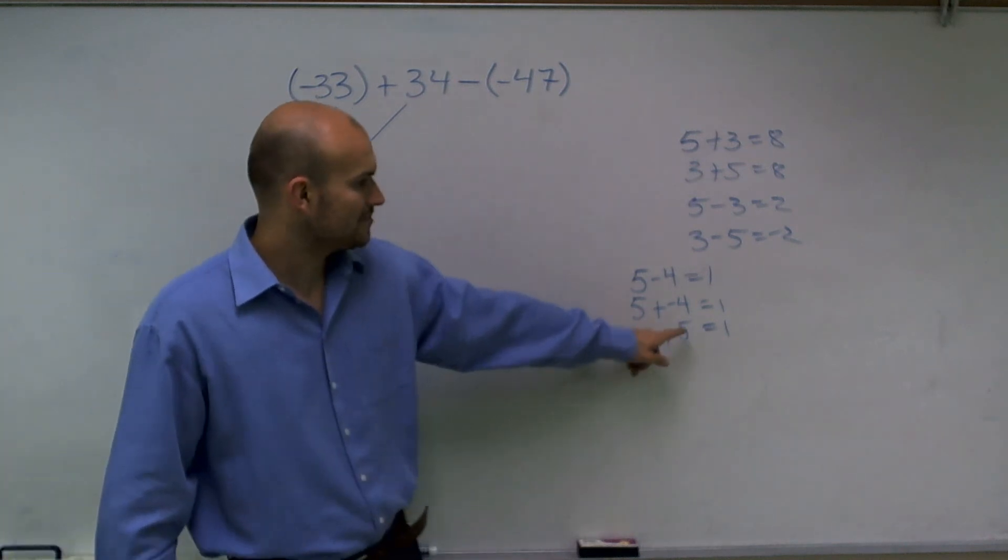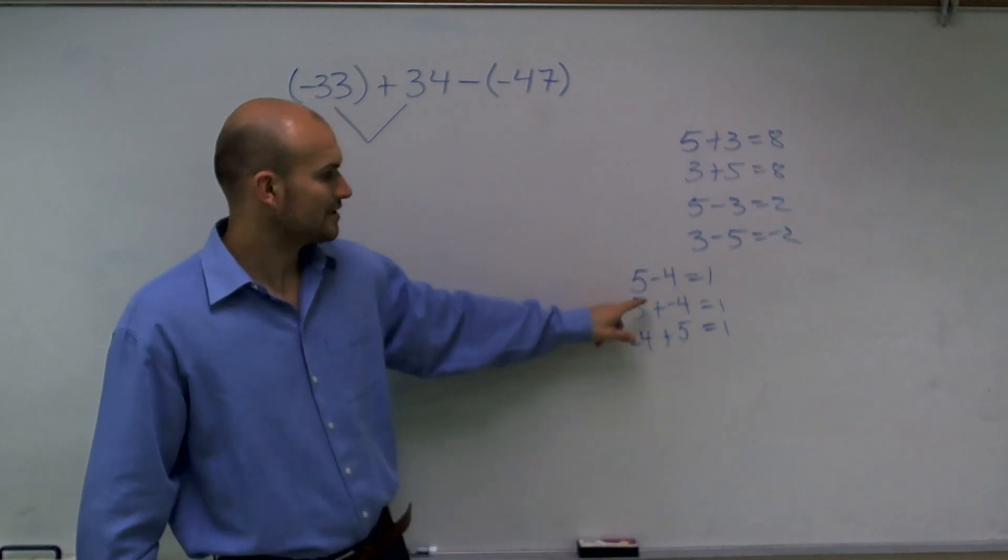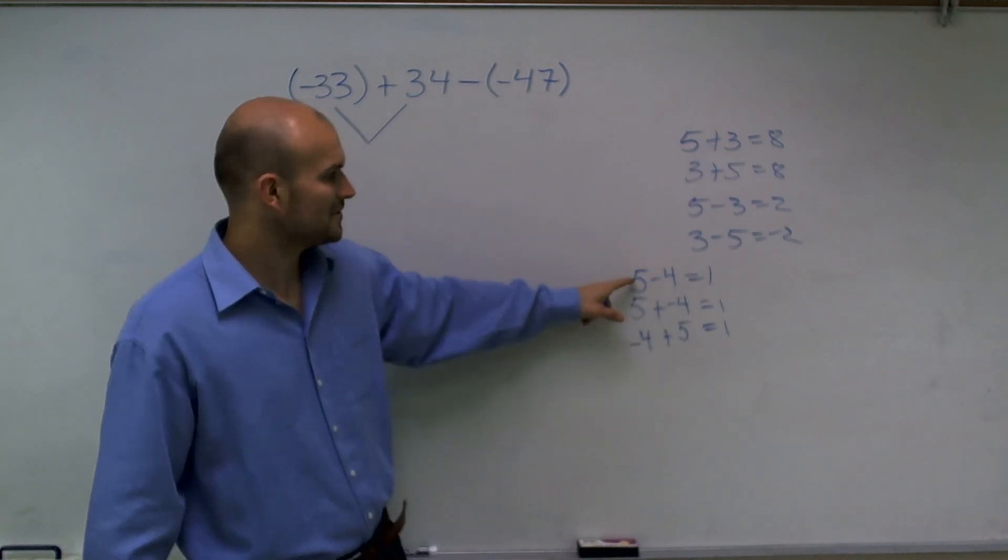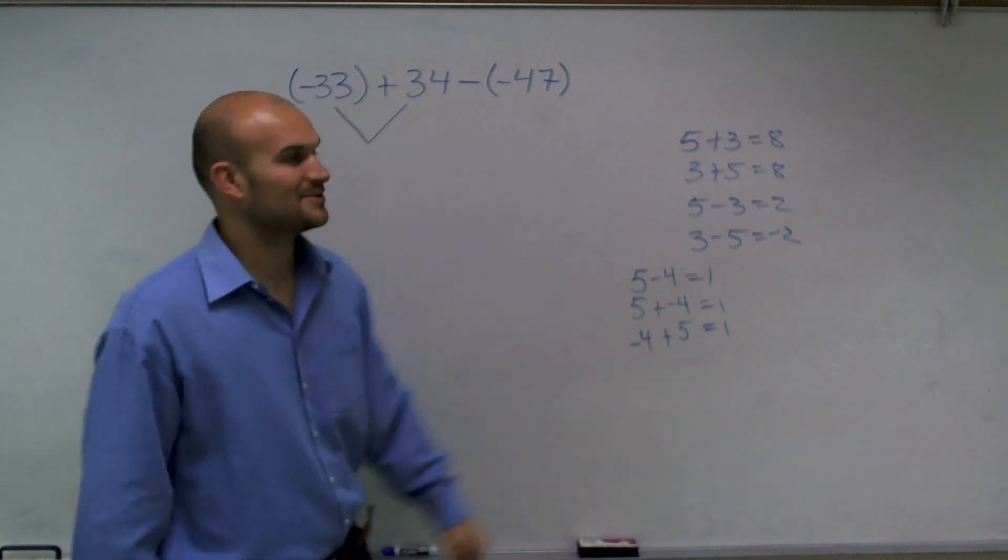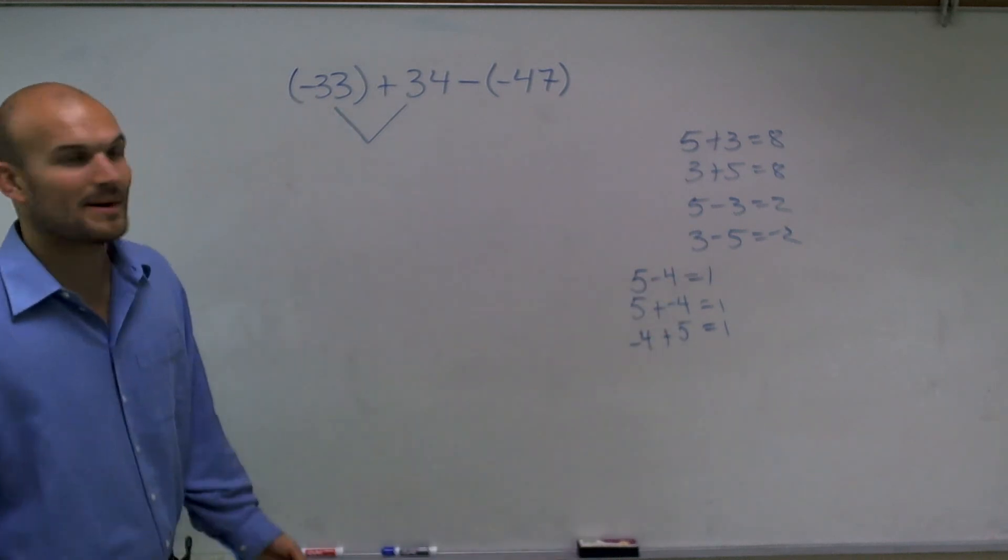Negative 33 plus a positive 34 is really 34 plus a negative 33, which is really 33 minus 34, or 34 minus 33, which we know is going to equal 1.